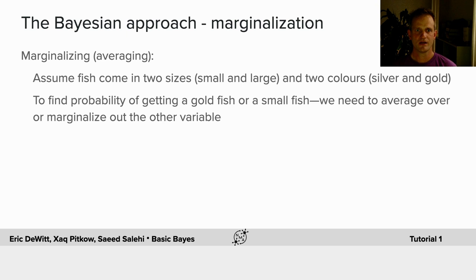Assume fish come in two sizes, small and large, and two colors, silver and gold. To find the probability of getting only a goldfish or only a small fish, we need to average over or marginalize out the other variable.